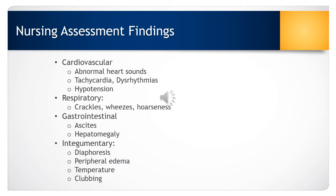When assessing a patient with valvular disease, we may find some of the following abnormal findings: abnormal heart sounds, tachycardia and dysrhythmias, and hypotension. Due to fluid overload and changes within pulmonary pressures, we may see crackles, wheezes, and hoarseness of the voice. In the GI system, we may see ascites in the abdomen or enlargement of the liver.